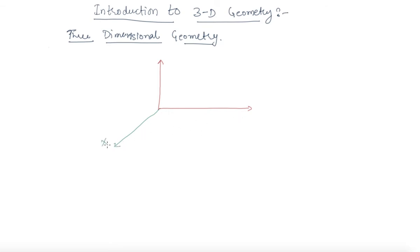Let us say this is the x-axis, this is z, then it is y. All three axes are perpendicular to each other.